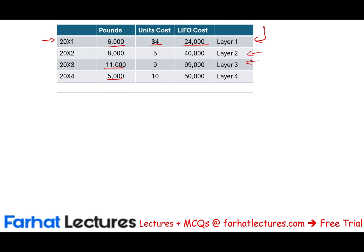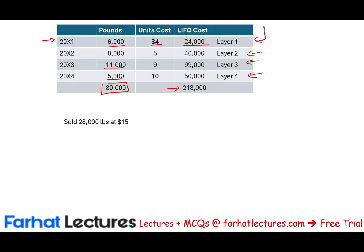In year X4, we purchase 5,000 pounds at $10 — LIFO cost of $50,000 (Layer 4). So from X1 to X4 we've been accumulating inventory layer over layer, for a total of 30,000 pounds and a total LIFO cost of $213,000 across all layers. Now assume that in year X4 we sold 28,000 pounds at $15. This is an extreme example, but it could happen quarter to quarter — the key point is that these are prior-period cost layers.